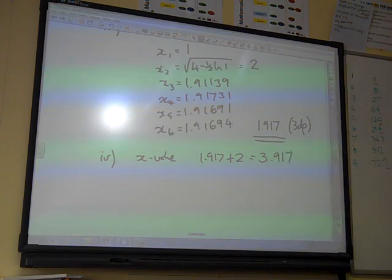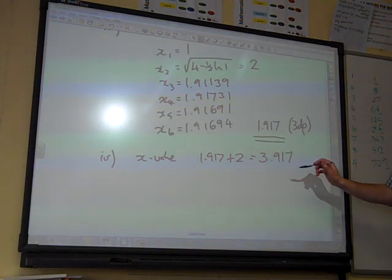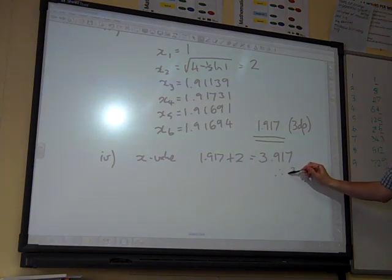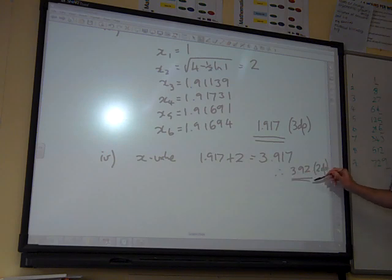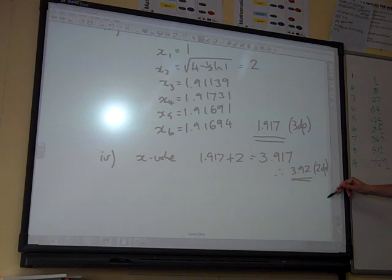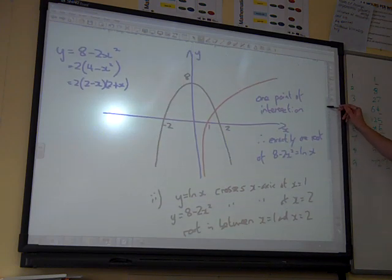1.917 plus 2 gives us 3.917. And the question said, give each coordinate correct to 2 decimal places, so 3.92 to 2 decimal places. So that's sorted the x value.